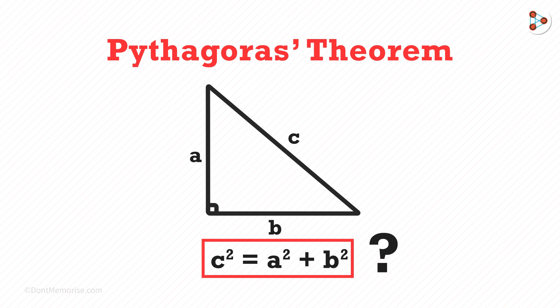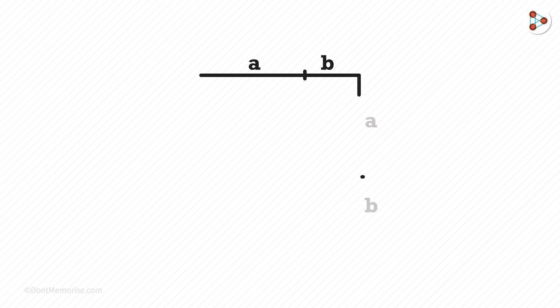But how did we derive this formula? Let's see. Let us take a line segment and divide it into a and b. And in the same way, we will draw a square.